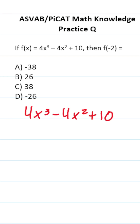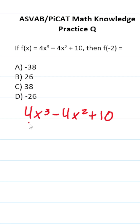This ASVAB Math Knowledge practice test question says: if f(x) equals 4x cubed minus 4x squared plus 10, then f of negative 2 equals. For this one, we're just going to plug in negative 2 for x and evaluate accordingly.